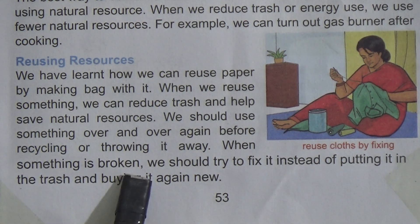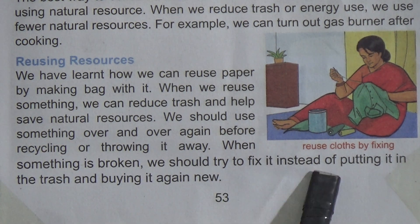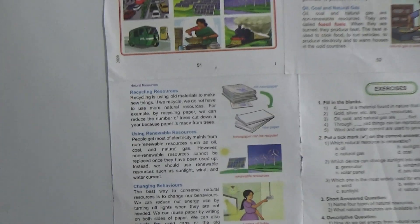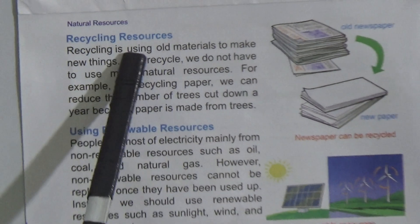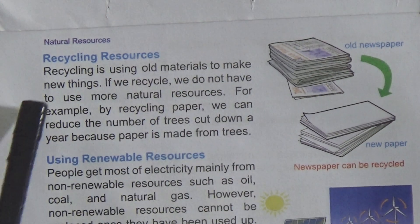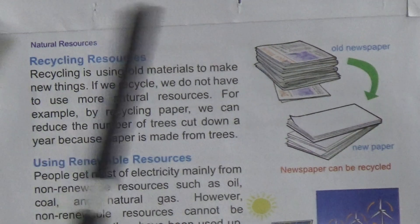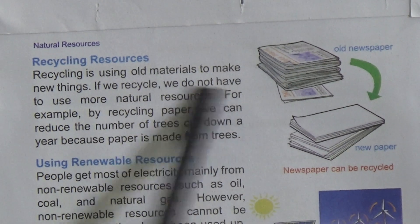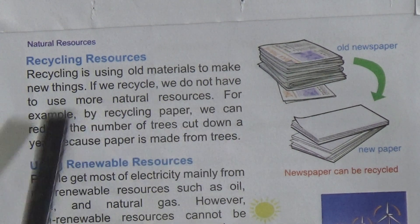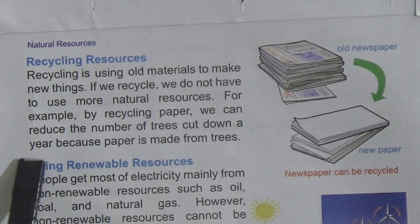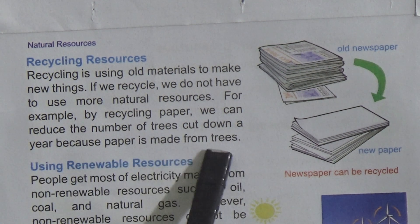When something is broken, we should try to fix it instead of throwing it away and buying a new one. Recycling resources: recycling is using old materials to make new things. If we recycle, we do not have to use more natural resources. For example, by recycling paper we can reduce the number of trees cut down each year, because paper is made from trees.